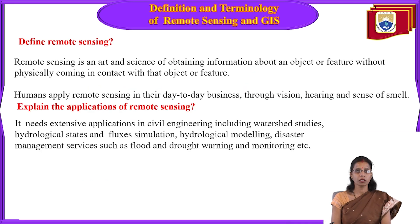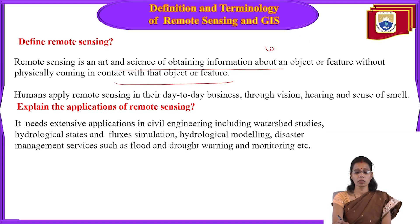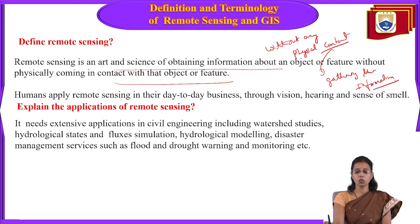Define remote sensing: remote sensing is the art, science, and technology of obtaining information about an object or feature without physically coming into contact with it. Without any physical contact, you are able to gather information — that is called remote sensing.